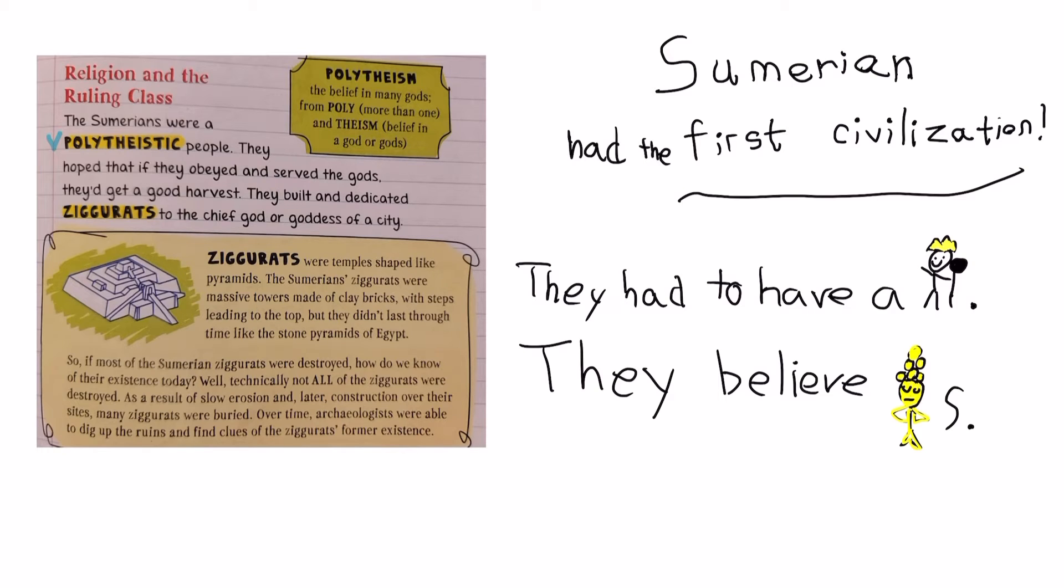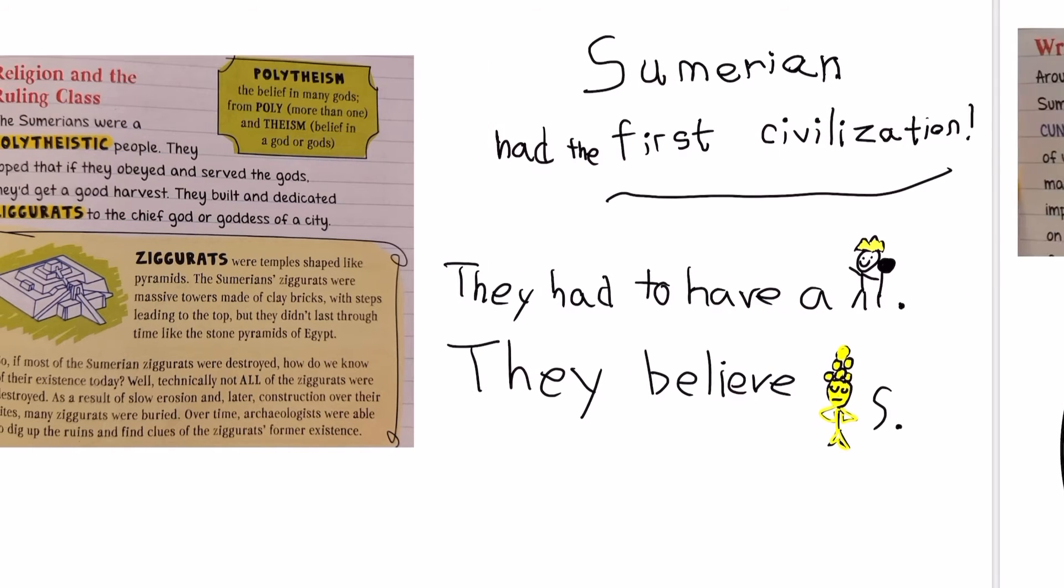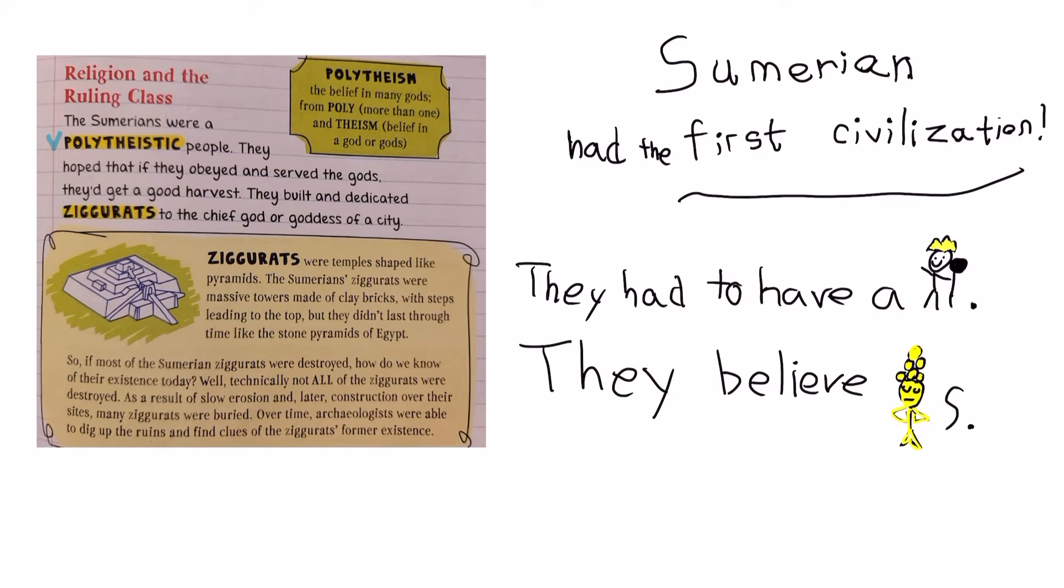So the king says who built what. The ziggurats were temple-like pyramids, but the Egyptian pyramids are still there. But the ziggurats were kind of messy and broken because they were made of mud actually. And the Egyptian pyramids were made of stone. Oh yeah, and the king only lived there.